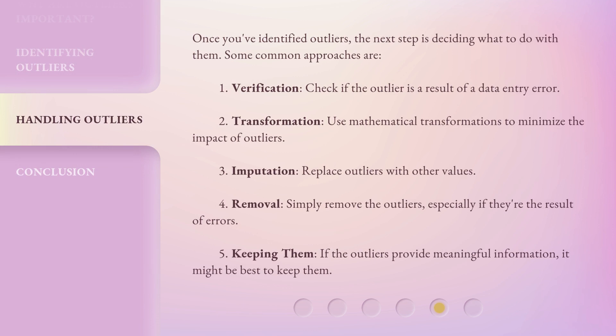Once you've identified outliers, the next step is deciding what to do with them. Some common approaches are: one, verification — check if the outlier is a result of a data entry error; two, transformation — use mathematical transformations to minimize the impact of outliers; three, imputation — replace outliers with other values; four, removal — simply remove the outliers, especially if they're the result of errors; five, keeping them — if the outliers provide meaningful information, it might be best to keep them.